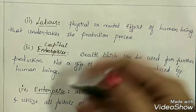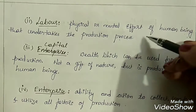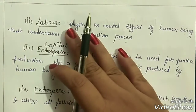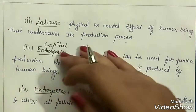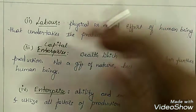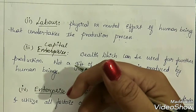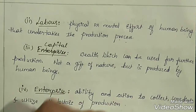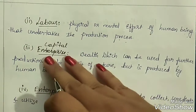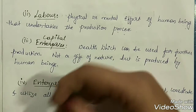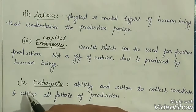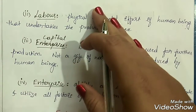Our second factor of production is labor — the physical or mental effort of a human being that undertakes the production process. We cannot completely depend upon machineries; we need human beings in our production unit. No matter how advanced our industry is, at least in order to start the machineries, we want human beings.